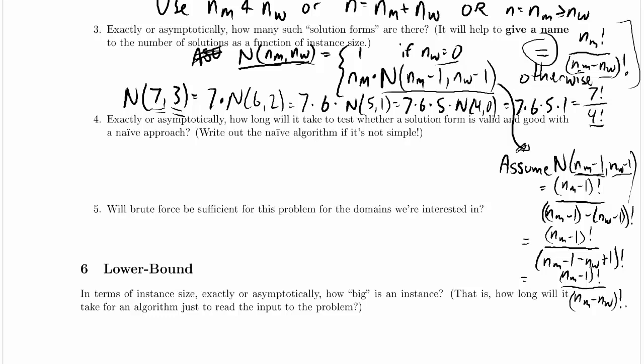The denominator is the same thing it was before. So if we assume going back up to our original recursive equation up here, if we assume that n of nm minus 1 comma nw minus 1 is equal to this quantity we got to down at the bottom, which is our induction hypothesis, and then we're going to multiply it by nm. Well, what's nm times nm minus 1 factorial? That's just the definition of factorial. That's going to be nm factorial. So we'll get nm factorial divided by nm minus nw factorial.